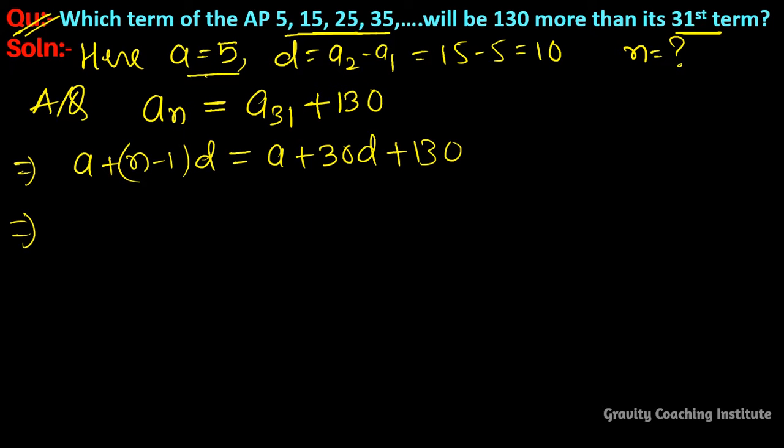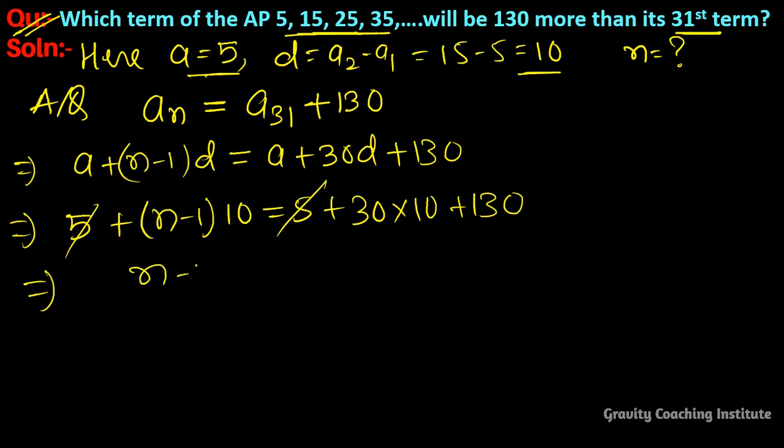Now we put the value of a and d to get n. So 5 plus (n-1) into 10 equal to 5 plus 30 into 10 plus 130. So implies that 5 and 5 cancel. (n-1) into 10